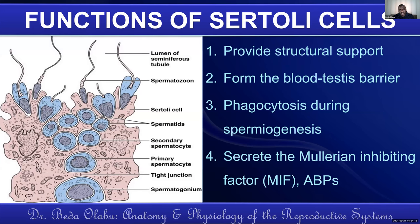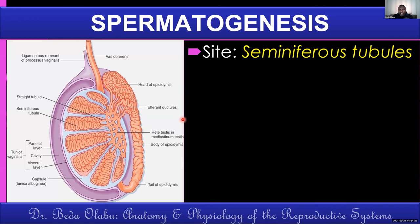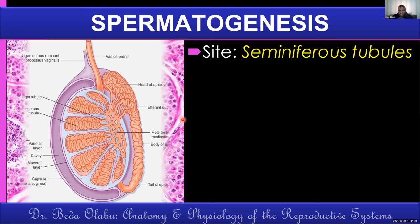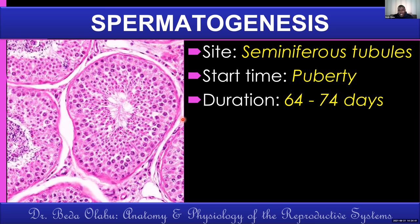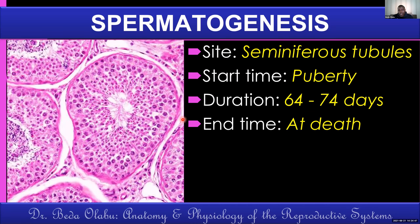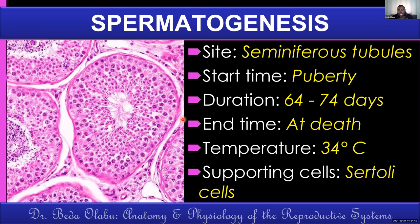Revisiting spermatogenesis: the site is the seminiferous tubules of the testes. The process begins at puberty, not before. It takes about two months to form a single sperm, and the process does not end until that man dies — it continues throughout life. The optimal temperature is about two to three degrees below body temperature. The cells that support development of sperms are Sertoli cells.